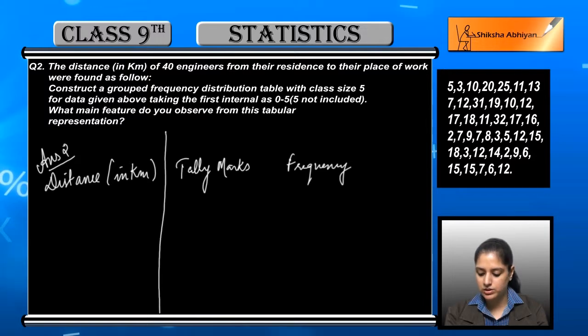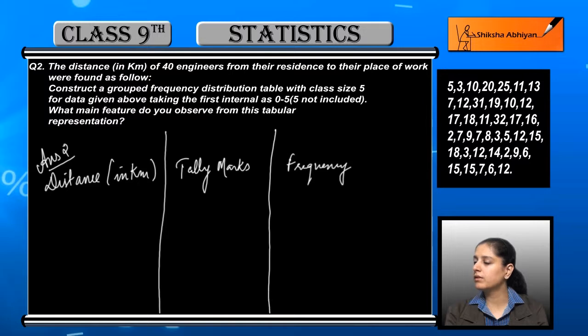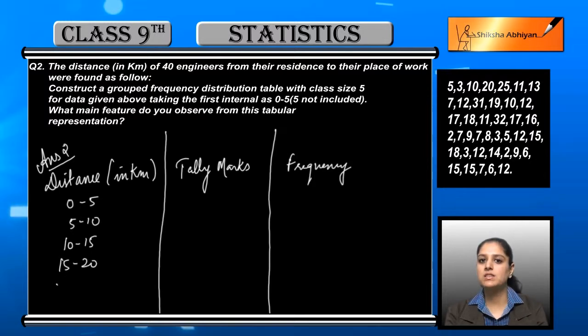The distances given to us will be grouped. The first group given in the question is 0 to 5, so next will be 5 to 10, we need to keep size 5, then 10 to 15, 15 to 20. We'll see what the highest number is and go up to there. So 20 to 25, 25 to 30, 30 to 35.